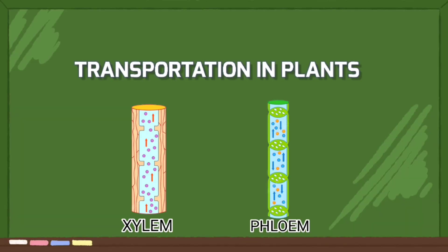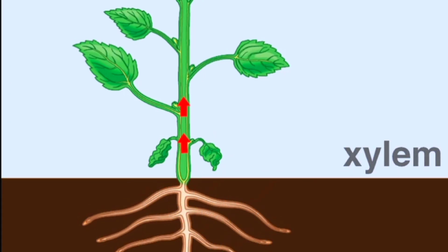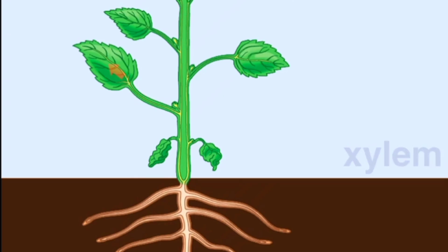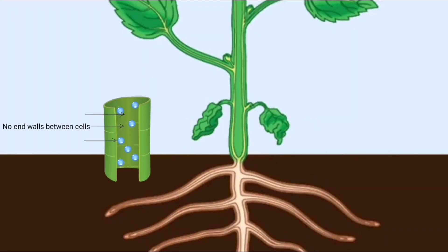Moving on to how plants transport water and nutrients — plants have two main vascular tissues: xylem and phloem. Xylem transports water and minerals from the roots to other parts of the plant, driven by capillary action and transpiration. Water evaporates from the leaves, creating a negative pressure that pulls more water up through the xylem.